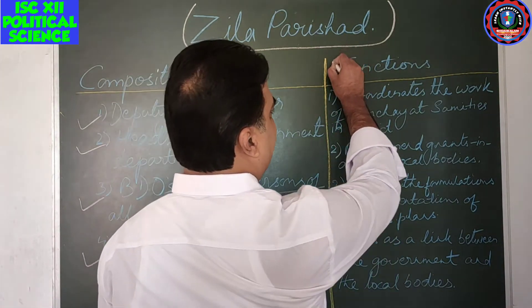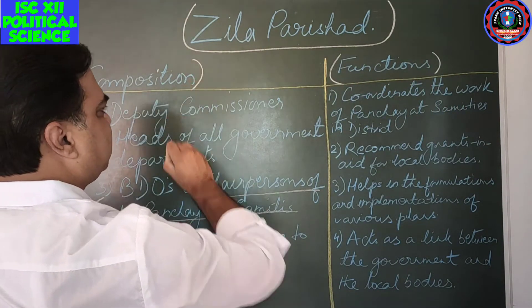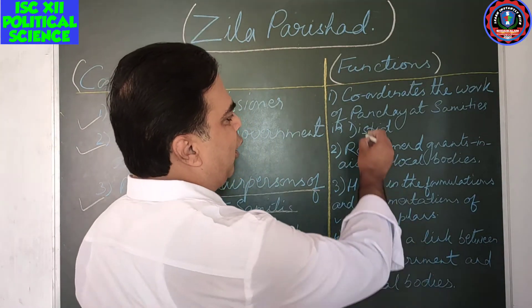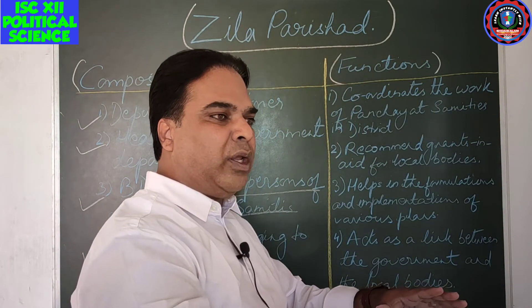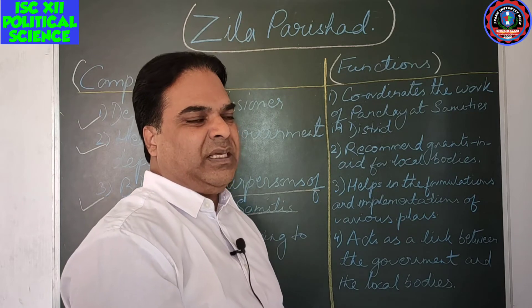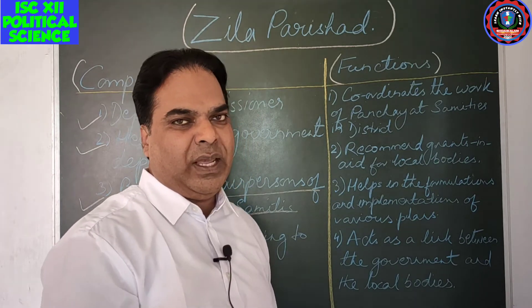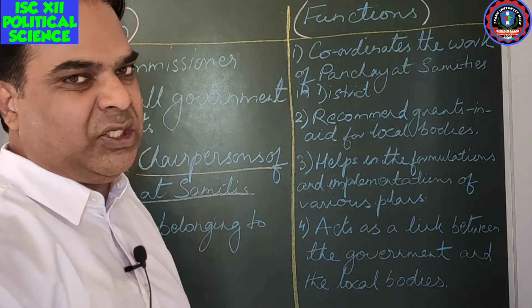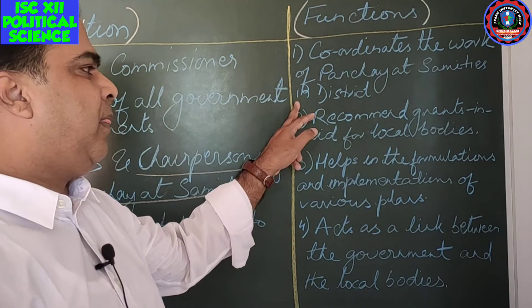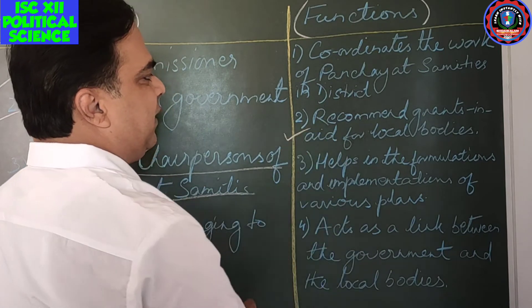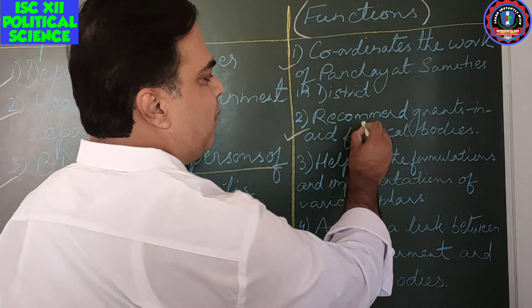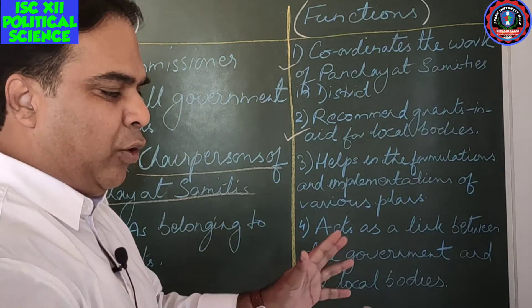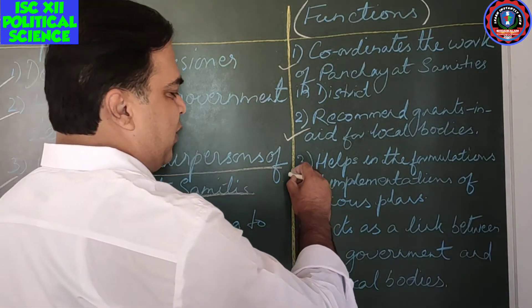Now, what are the functions of Jila Parishat? The first important function is that Jila Parishat coordinates the working of the entire panchayat samitis as well as the village level. At the top, Jila Parishat coordinates the work of panchayat samitis in the district. The next function is to recommend grants-in-aid for local bodies — recommendations of grants to all the local bodies are done by the Jila Parishat.